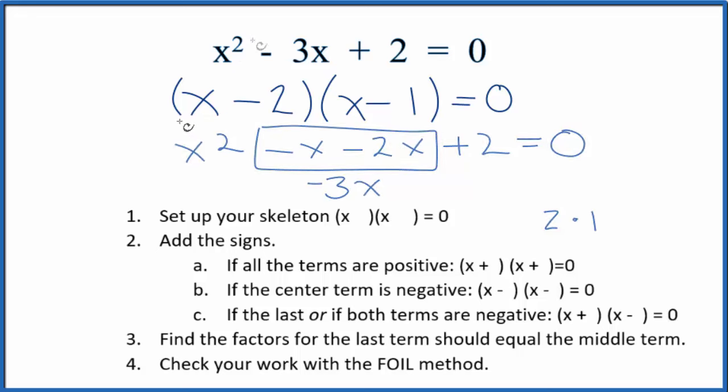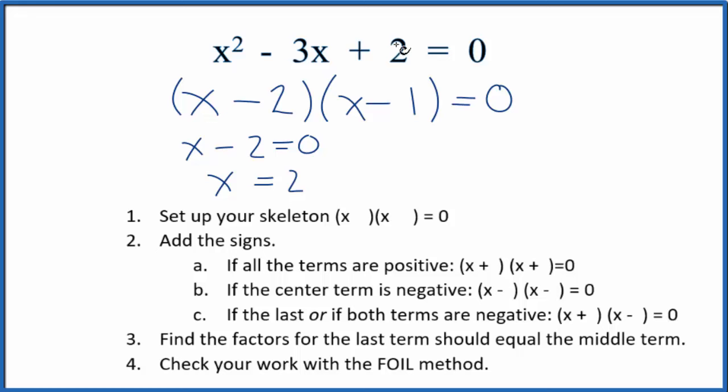Let's find the solutions for each one of these now. We could say x - 2 = 0, add 2 to both sides, that gives us x = 2. Over here, x - 1 = 0, add 1 to both sides, x = 1.